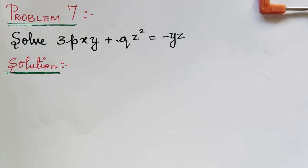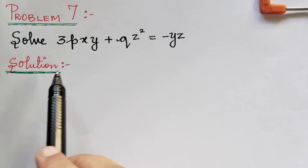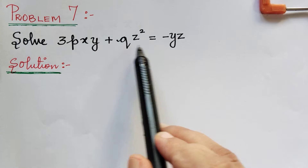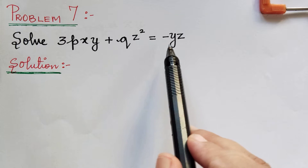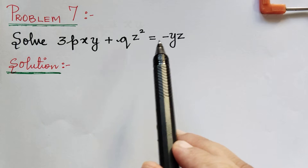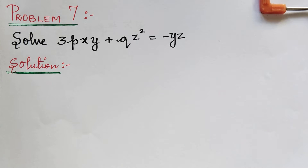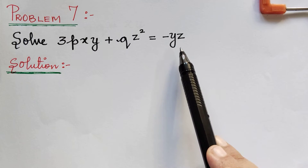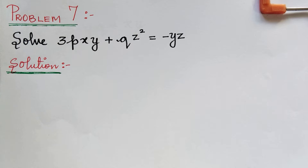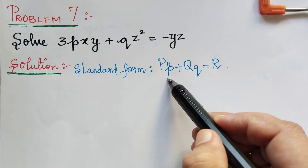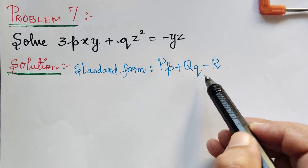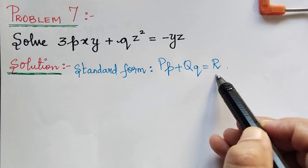Hello students. Under the topic Lagrange's partial differential equation, here we have problem 7. The given question is of the Lagrange's form, so let us compare it with the standard form of the Lagrange's partial differential equation. The standard form is given by capital P small p plus capital Q small q is equal to capital R.